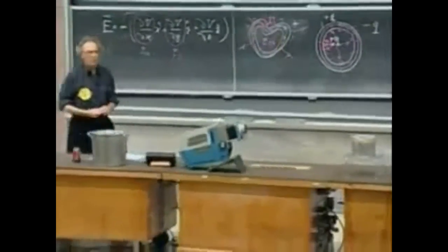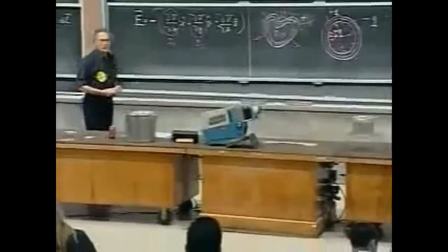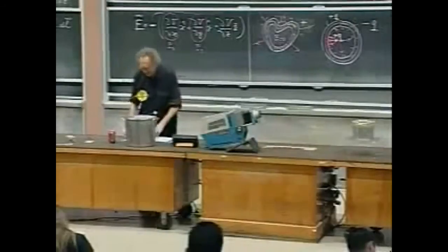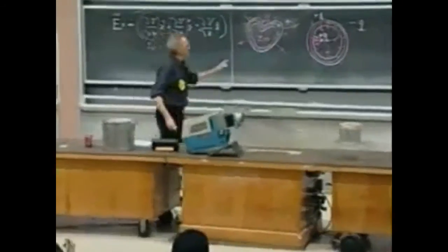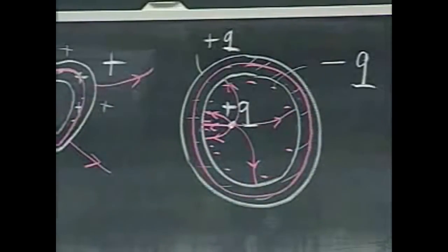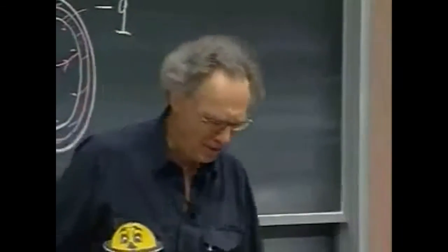What now is the charge distribution on the outside? That is the hardest of all and by no means obvious. It turns out that the charge on the outside, on this sphere, because it is a sphere, will be uniformly distributed. And it is not intuitive.